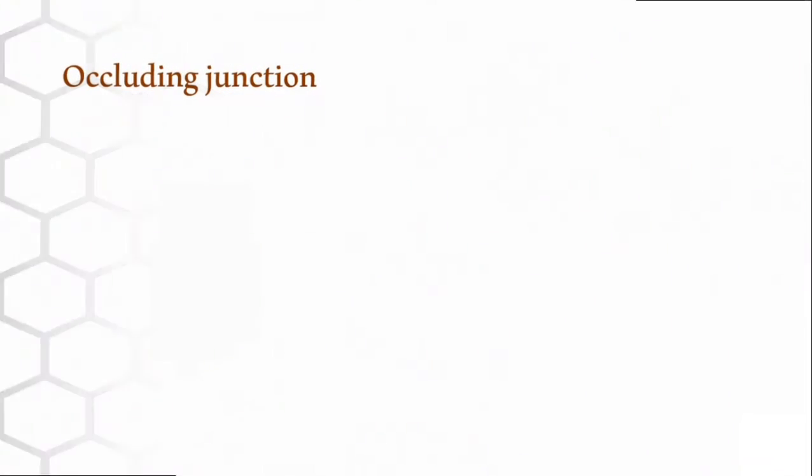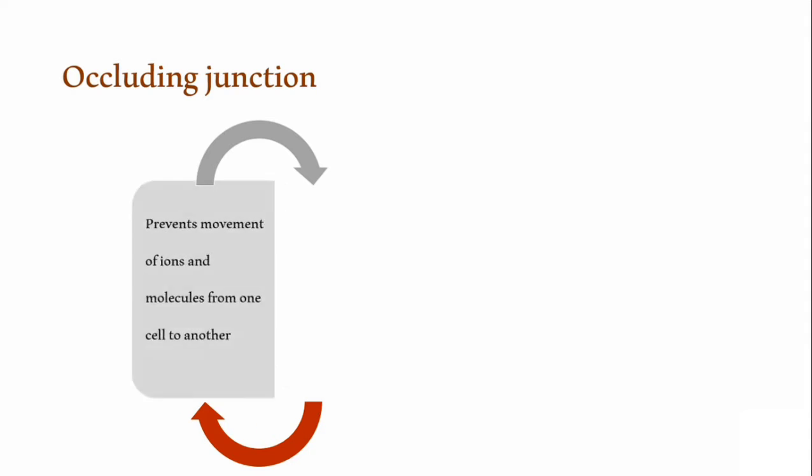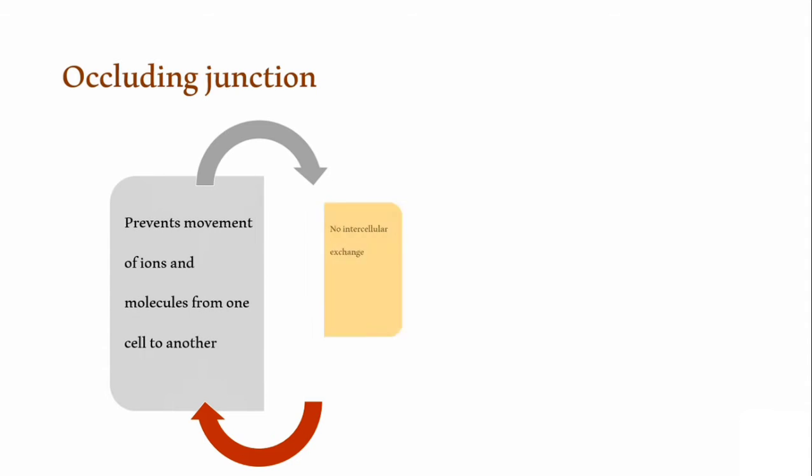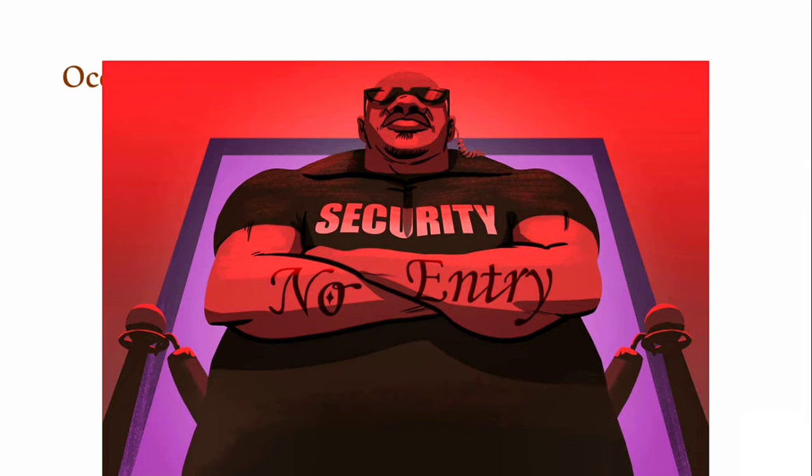So let us move on to the topic of interest today, which is the occluding junction. An occluding junction is the type of cell junction where there is no intercellular exchange. That is, no exchange is happening between two adjacent cells - neither molecules nor ions. There is no exchange between two adjacent cells.